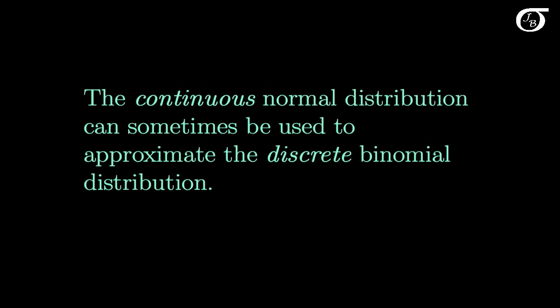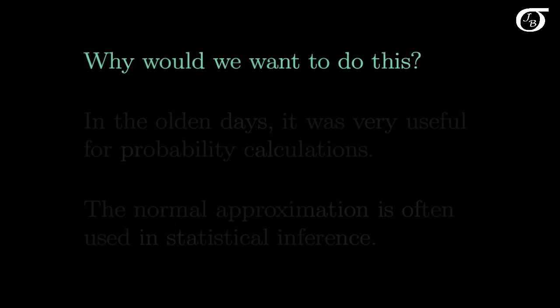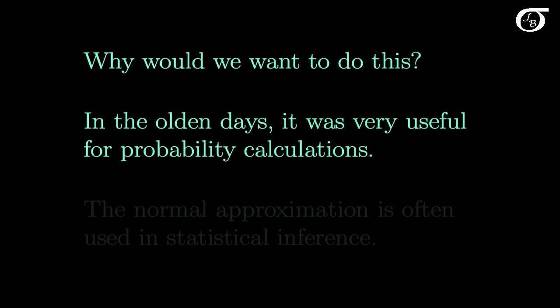Let's take a look at the normal approximation to the binomial distribution. The continuous normal distribution can sometimes be used to approximate the discrete binomial distribution. Why would we want to do this? In the olden days it was very useful for probability calculations.